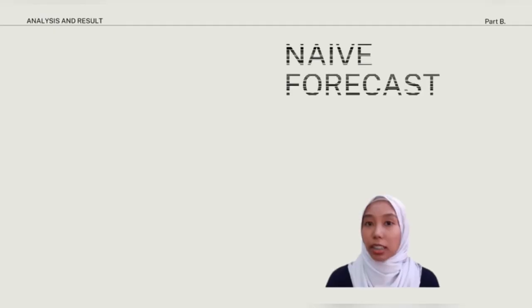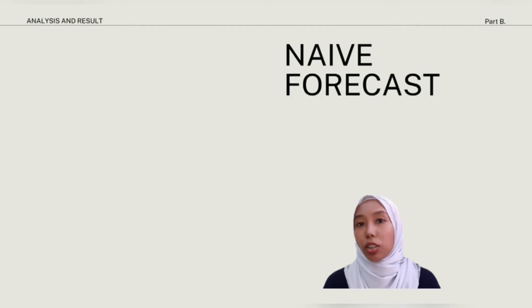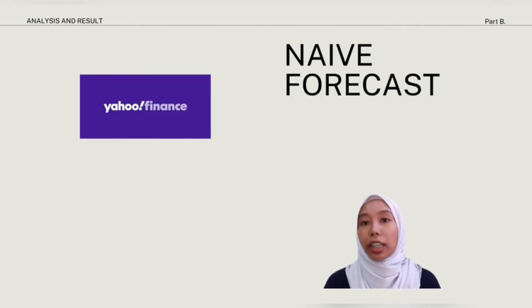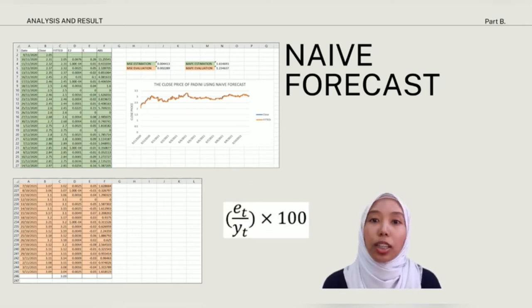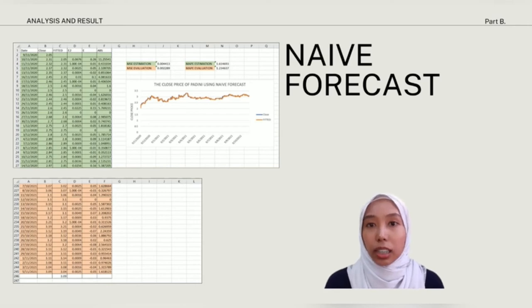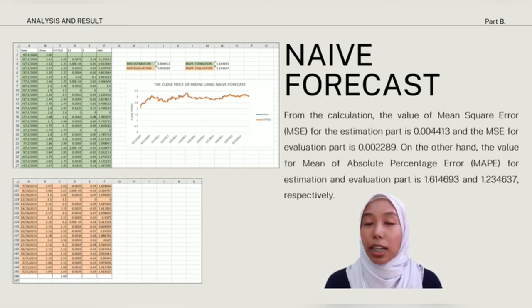For analysis and result part B, I will start with the naive forecast. After we got our Padini data from Yahoo Finance, we divided our data into two parts which are estimation parts and evaluation parts. Three over four of the data became an estimation part and the baseline is evaluation part. Then we proceed to find the fitted value by using one step ahead forecast. Then we got forecast value of 3.09. The value for error is calculated from the chart of close price minus fitted value. For absolute percentage error, we use this equation to get the value. After all the calculation, we got MSE and MAPE for estimation and evaluation using its own equation.